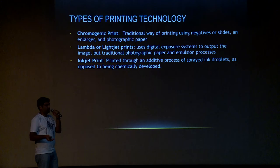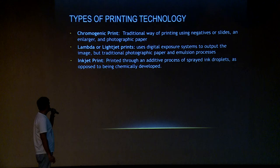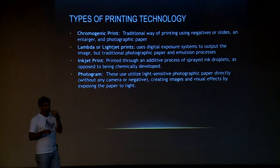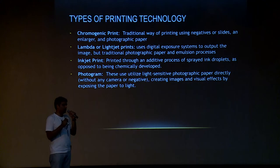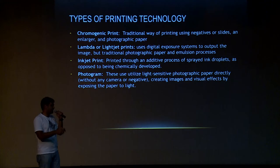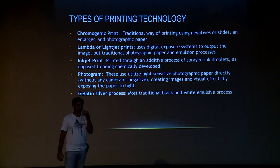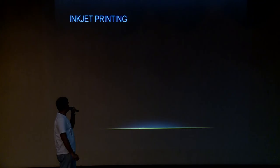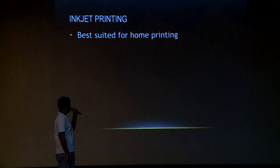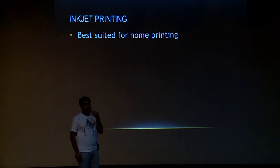With inkjet, you have printing machines that can be used at home and yet produce professional quality prints. Then you have cameras like the Polaroid or the Fuji Instax, which use photogram technology with light-sensitive paper — the moment you expose the paper to light, the photograph develops by itself. And lastly, there is the gelatin silver process, which is a traditional black and white emulsion process. Of all these technologies available in the market today, inkjet printing is king — the best type of technology which can be used both at home and professionally.